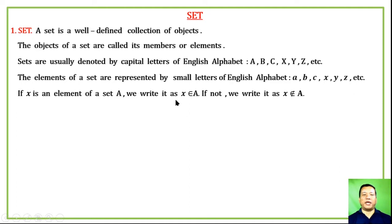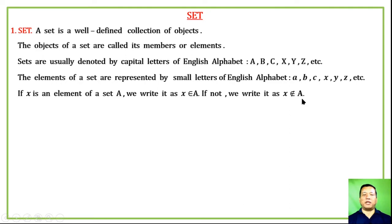If x is an element of a set A, we write it as 'x belongs to A.' The symbol means x is an element of A or x is contained in the set A. If x is not a member of A, we write 'x does not belong to A.'